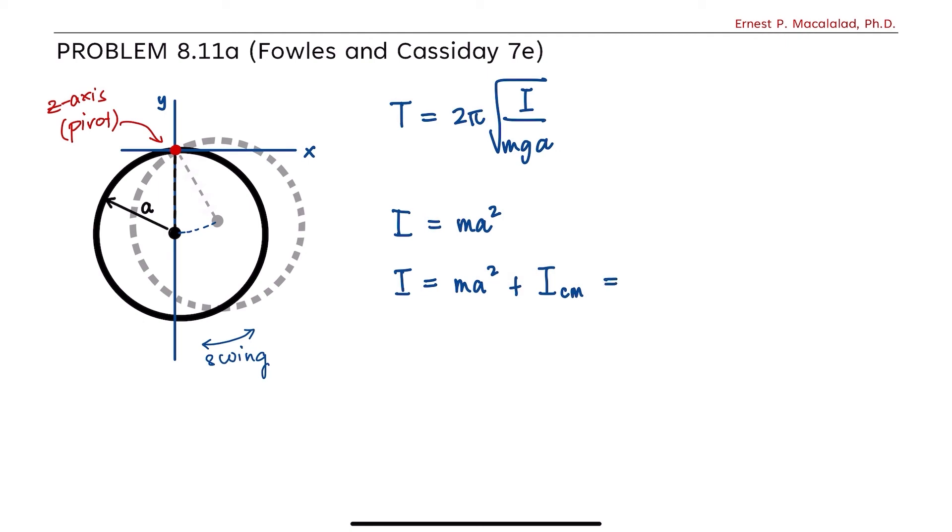So therefore, this is now equal to 2ma². Thus, the period of oscillation is equal to 2π times the square root of 2ma² divided by mga.